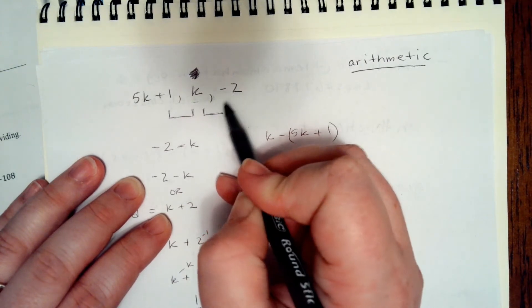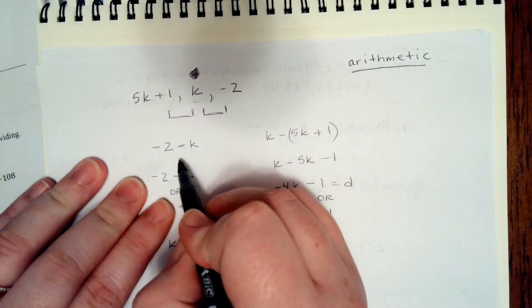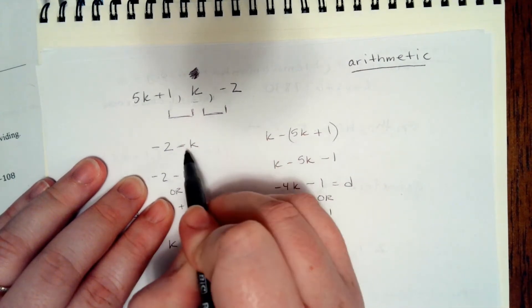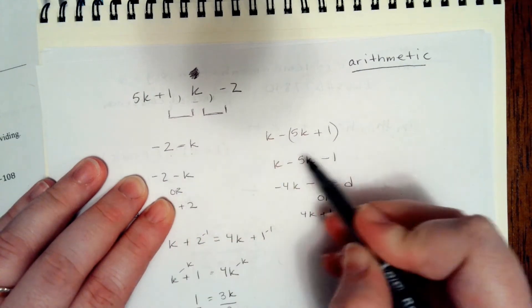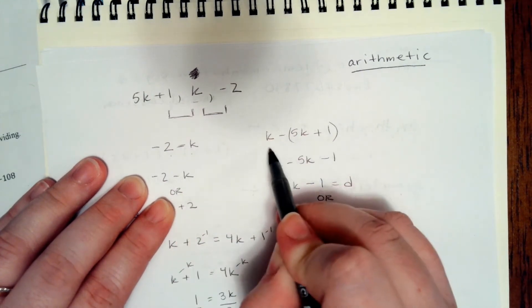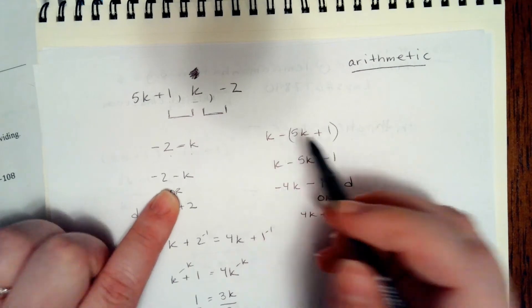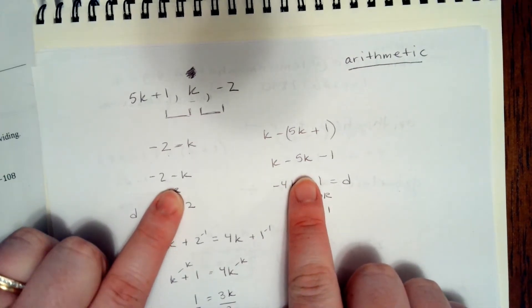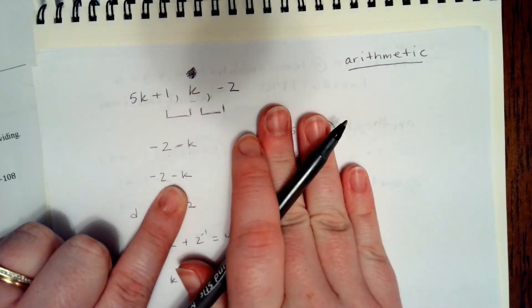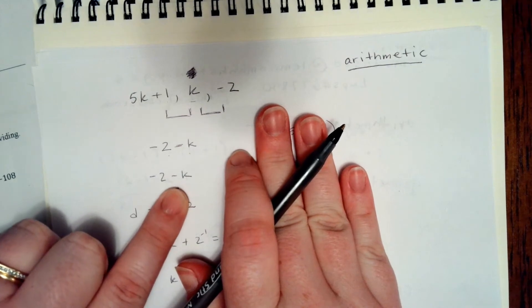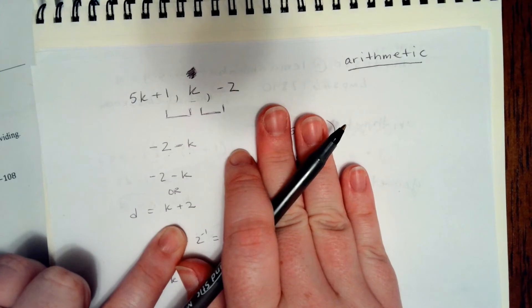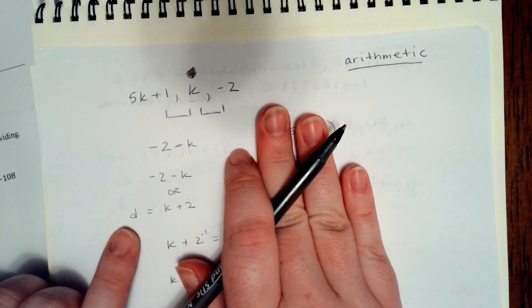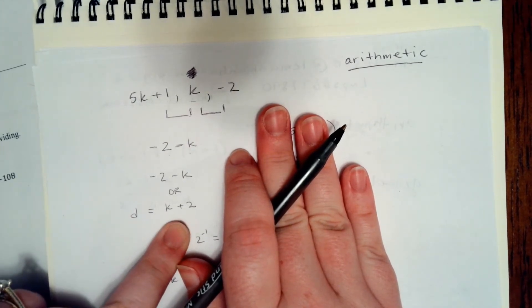So we then know we can subtract the second term from the third and we can subtract the first term from the second. When we simplify this part of this problem we get negative 2 minus k, or if we divide that all by negative 1, we know that our difference is k plus 2.